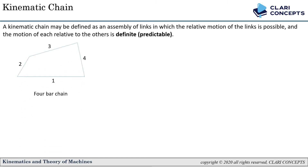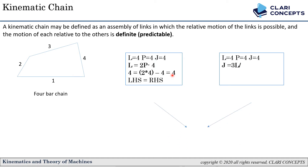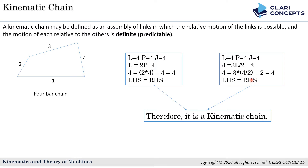For the four bar chain: l = 4, p = 4, j = 4. Applying the first equation gives LHS equal to RHS — exactly 4 = 4. The second equation also gives 4 = 4, so LHS equals RHS. Therefore the four bar chain is a kinematic chain — relative motion is present and it is also definite.